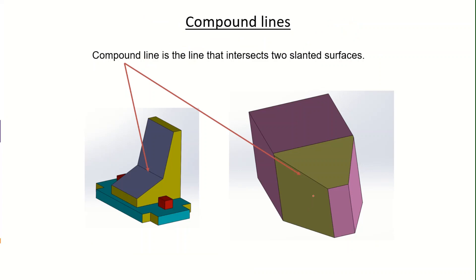Next are compound lines, simply defined as the line that intersects two slanted surfaces. In this solid model, if one surface is slanted and the other surface is also slanted, the line that joins these two slanted surfaces is called a compound line. Any line joining two slanted surfaces is called a compound line.